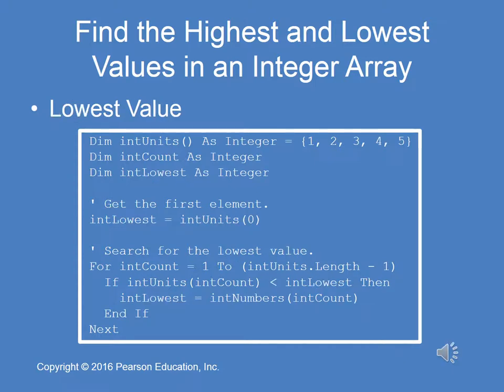Here we have the code to find the lowest. It is very similar, except we set int lowest to int units sub zero. Then we go through the count from one to int units dot length minus one, and we ask if the current int units sub int count is less than int lowest — then we assign the current value to int lowest. In this particular case, it will never swap because we're going to start with the lowest value one, comparing two to one — not swap, three to one — not swap, four to one — not swap, five to one — not swap.